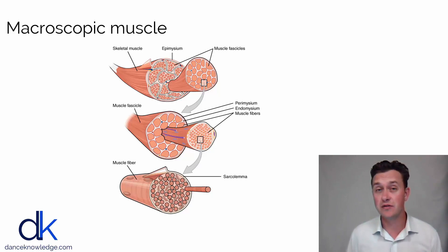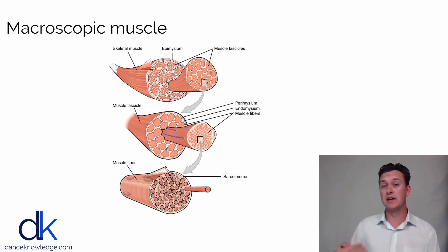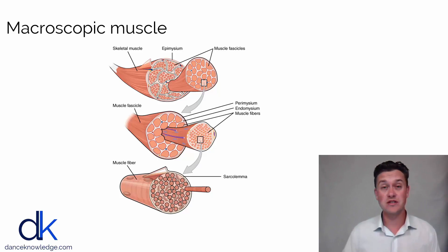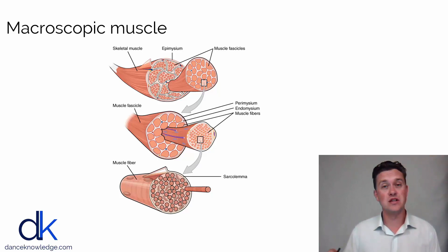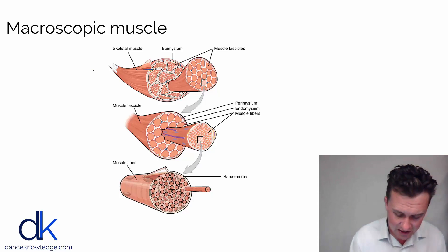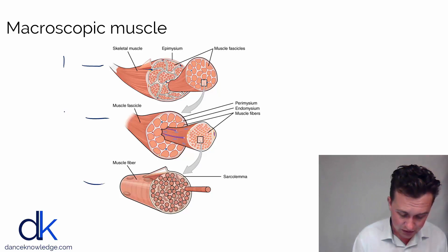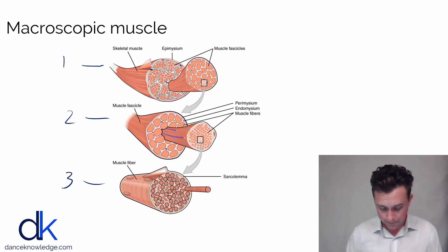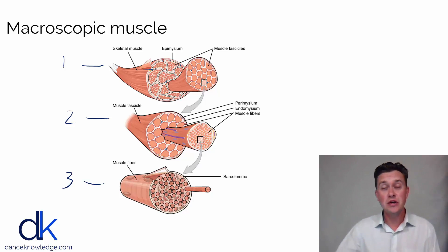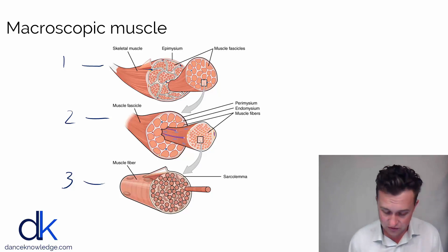One of the best examples I can give around how a skeletal muscle is structured at a macroscopic level is that of a bungee cord. If you've ever seen the cross-section of a bungee cord, it is one big elastic rubber band made up of lots and lots of little rubber bands. If we go down the page here from picture one to picture two to picture three, it's effectively zooming into the muscle from an outside perspective, going deeper and deeper into the muscle.